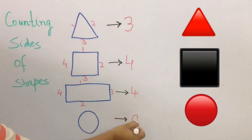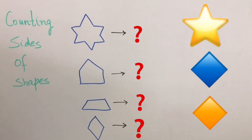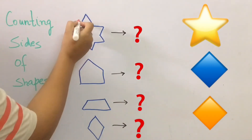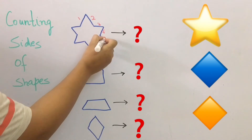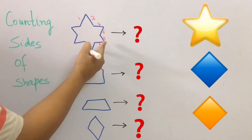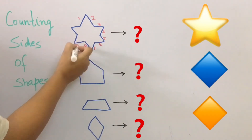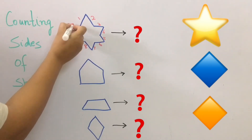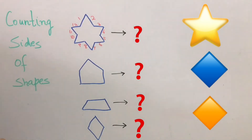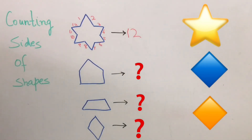Next we have a lovely star. Let's count the star's sides — one, two, three, four, five, six, seven, eight, nine, ten, eleven, and the last one — twelve. So this star has twelve sides. Very good!